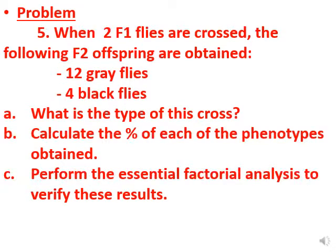Now let's move to Part 5. When two F1 flies are crossed, the following F2 offspring are obtained: 12 gray flies and 4 black flies. We cross F1 with F1 — this type of cross is called a selfie cross (self-cross).